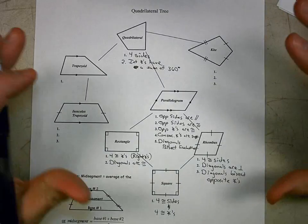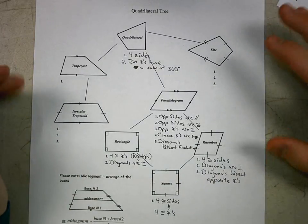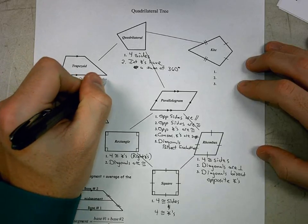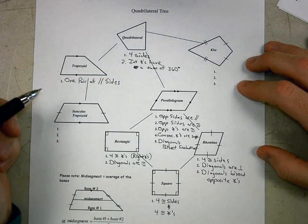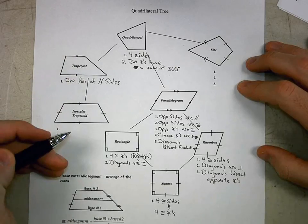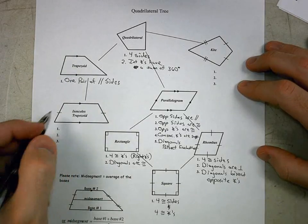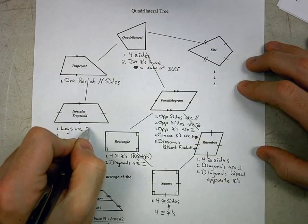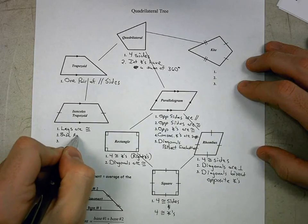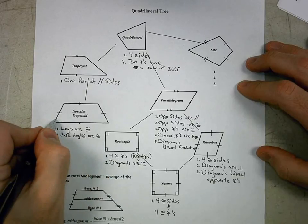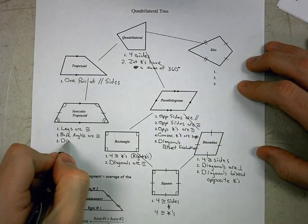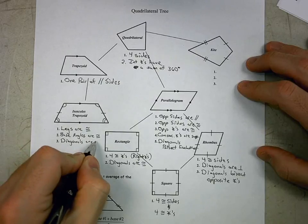A trapezoid has exactly one pair of parallel sides — not at least one, just one, because if it had more than one it would be a parallelogram. A more specific version is the isosceles trapezoid, where the legs are congruent, base angles are congruent in two pairs, and the diagonals are congruent.